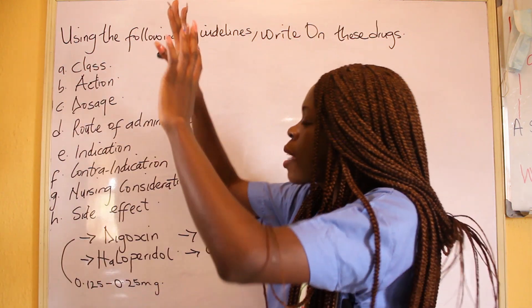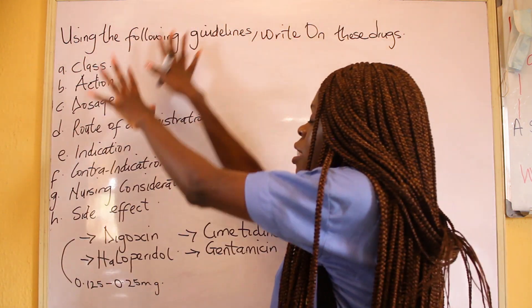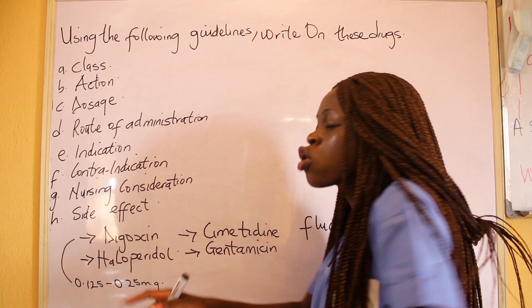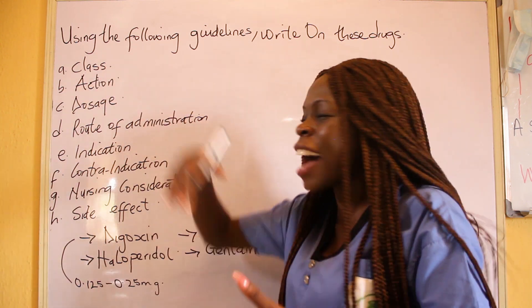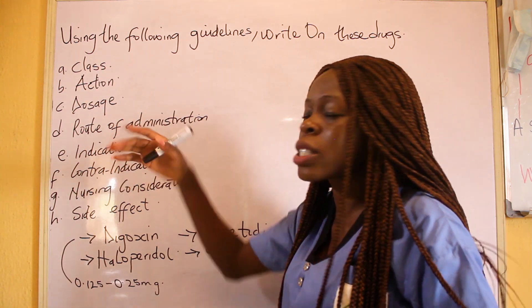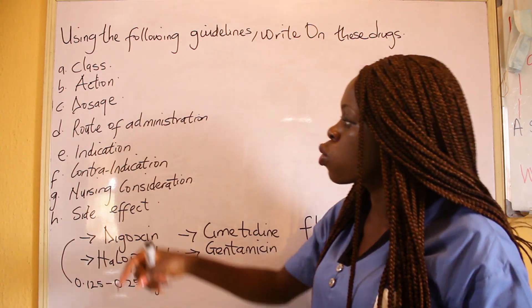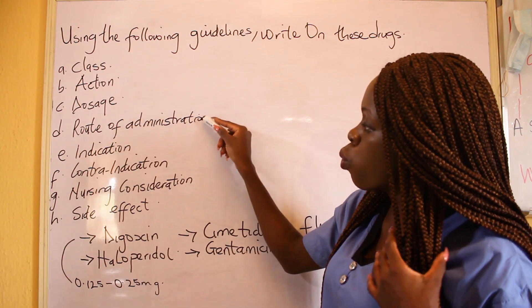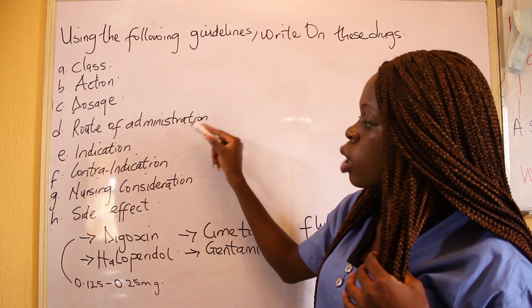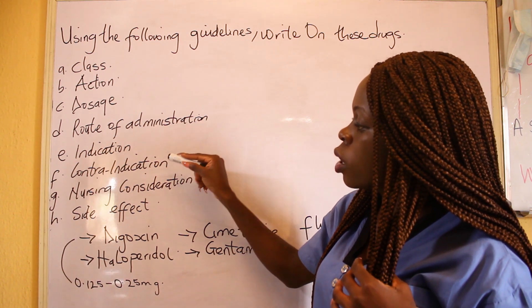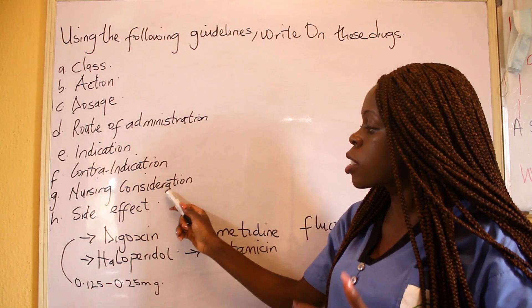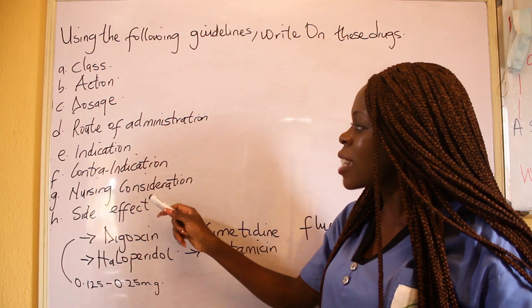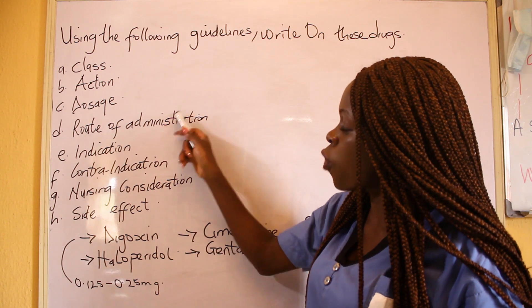So instead of coming to the exam and leaving all these things blank because you don't know the class, you don't know the action, you don't know the dosage — it's better for you to write the route of administration, indication, contraindication, nursing consideration, and side effects, which is four areas.